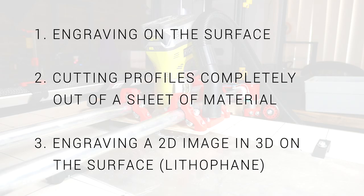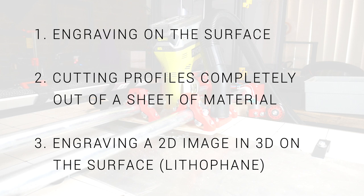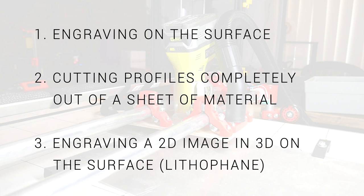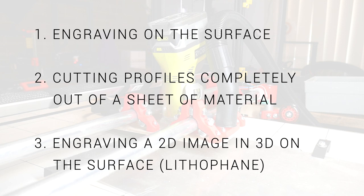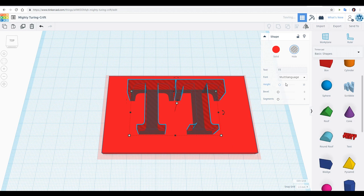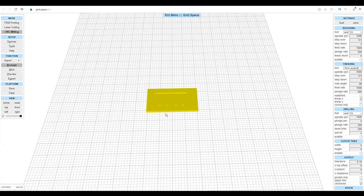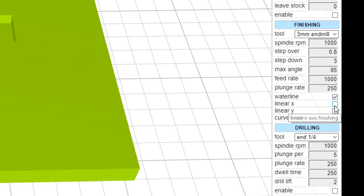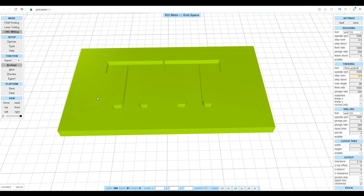There's three types of cuts we're going to cover. Engraving something on the surface, cutting something out completely as a profile from a sheet of material and engraving a 2D image in 3D on the surface just like a lithophane in 3D printing. We're going to start with our engraving and I'm doing the very simplest of hello world with TT created in Tinkercad. We're ready to import our STL by simply dragging it onto the screen. And the only finishing technique we need is waterline instead of something else like linear X.